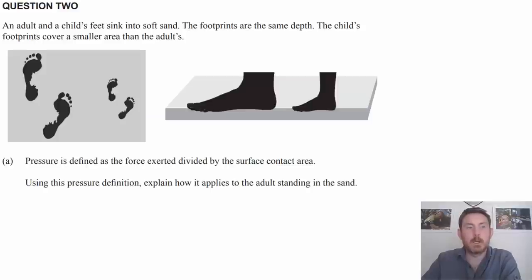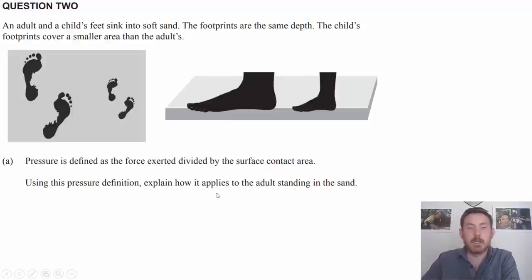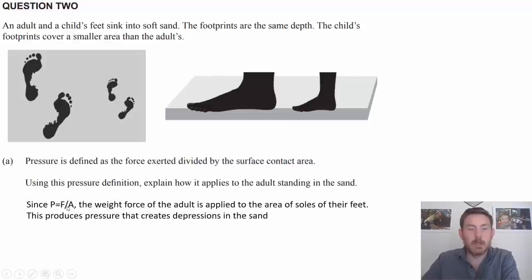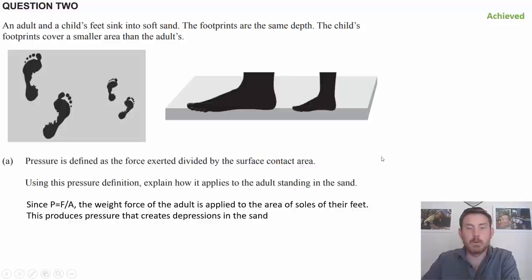On to question two. We've got an adult and a child whose feet have sunk into soft sand — footprints the same depth even though there's a different area for both. Pressure is defined as force divided by surface area. Using this definition, we're asked to explain how it applies to the adult standing in the sand. The weight force F of the adult is applied to the area A of the soles of their feet, producing the pressure that creates depressions in the sand. That's just an achieved answer.